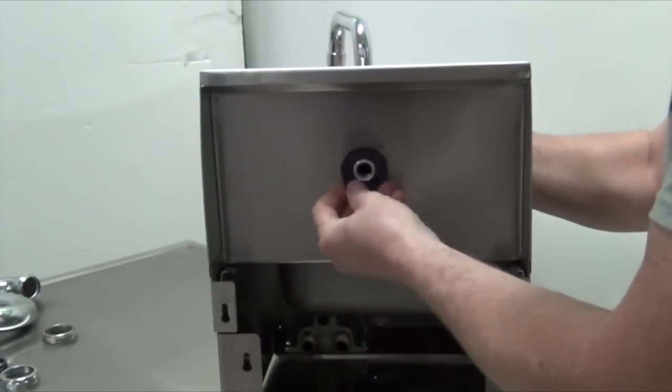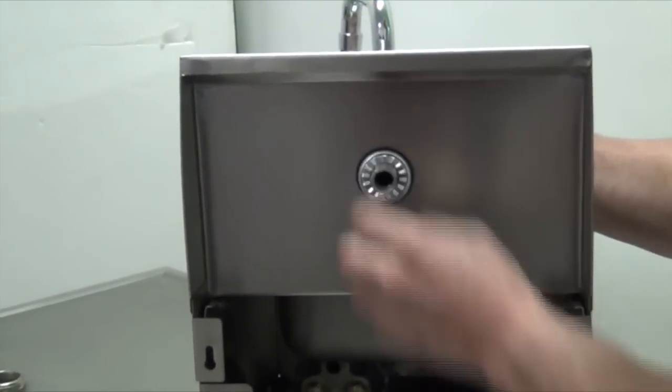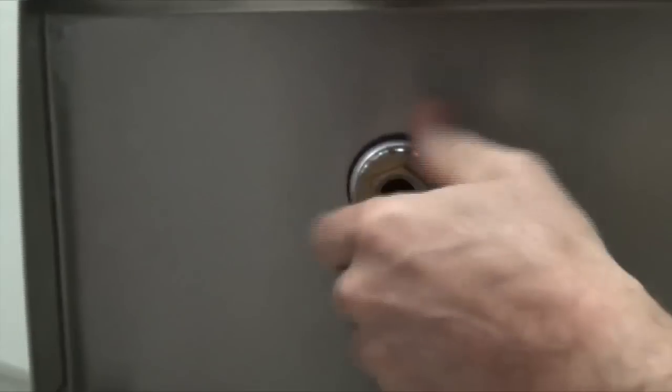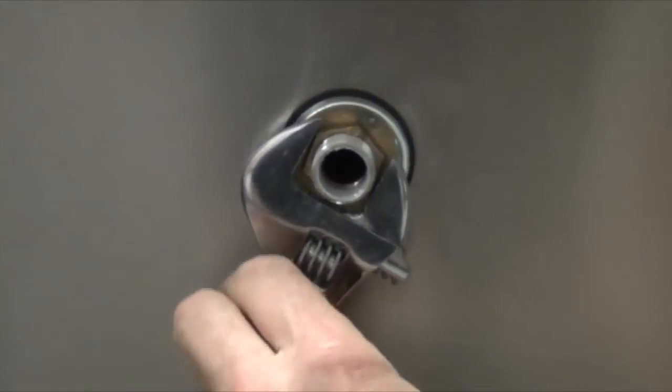Next, place a rubber grommet, serrated lock washer, and hex nut on the rear side of the faucet. The hex nut should then be tightened with a wrench.